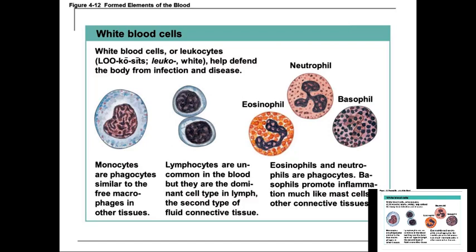We'll get into the different types of white blood cells in more detail when we cover the circulatory system. White blood cells are broken down into granular and agranular based on the cytoplasm. Looking at granular cells, you can see granules in the cytoplasm — these granules degranulate and release strong enzymes to break down bacteria. On the left-hand side, the monocyte and lymphocyte are agranular — nice, clear cytoplasm. Basophil, eosinophil, and neutrophil are granular.